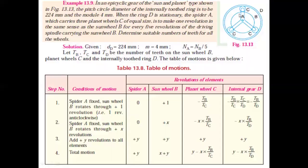The next problem is for the planetary gear system. Here, B is the annular wheel, B is the sun gear, A is the arm, and C is the planet gears. When ring D is stationary, the spider A — that is the arm — which carries three planet gears C of equal size, is to make one revolution in the same sense as the sun for every five rotations of the driving spindle. Module and diameter of the annular wheel are given; find the number of teeth using this speed ratio.